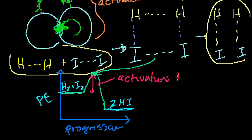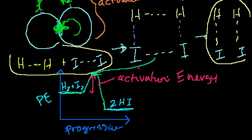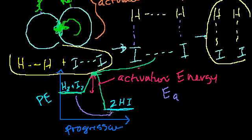If we're able to put enough energy into the system, then this reaction will happen — they'll collide with enough energy and bonds will be broken and reformed. Activation energy is sometimes written as EA, the energy of activation. In the future we'll do reactions where we actually measure the activation energy. But the important thing is to conceptually understand that it's there — things just don't spontaneously go directly from reactants to products without passing through this higher energy state.